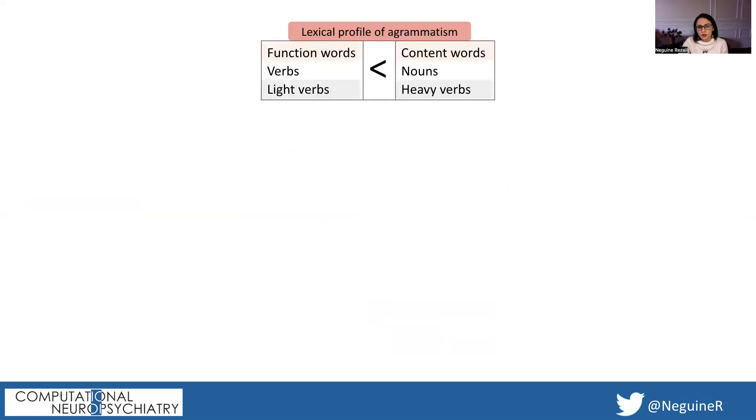These features have been observed for decades now. But how do we interpret them? According to the classic agrammatic view of the disease, what is common among these words is that they all have a syntactic role in a sentence. And since patients with agrammatism have difficulty processing syntax, they avoid these words.